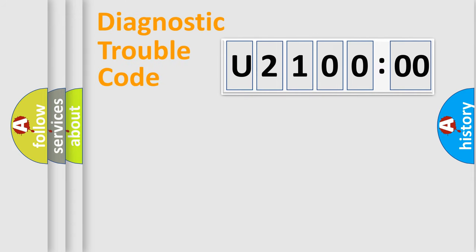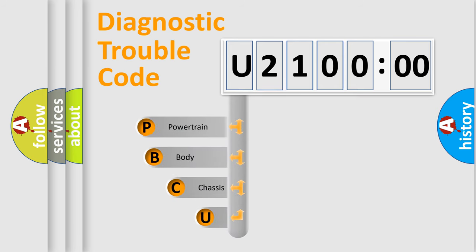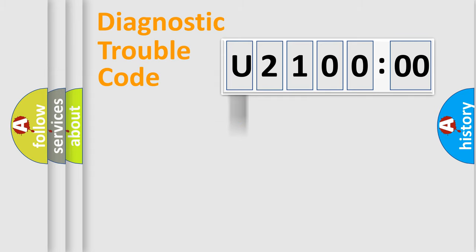Let's do this. First, let's look at the history of diagnostic fault code composition according to the OBD2 protocol, which is unified for all automakers since 2000. We divide the electric system of automobile into four basic units: Powertrain, Body, Chassis, and Network.